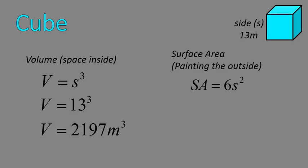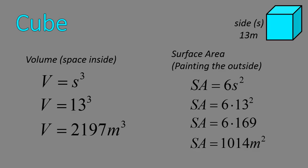Surface area is 6 times the side squared, SA = 6s². In this case, 6 times 13 squared. Now, 13 squared is the area of one of the faces of this cube. So we find the area of one of the squares, and then we multiply it times 6, because there's 6 squares on the outside of this cube. 13 squared is 169. 6 times 169 gives us 1,014 square meters. That is the surface area of this cube.